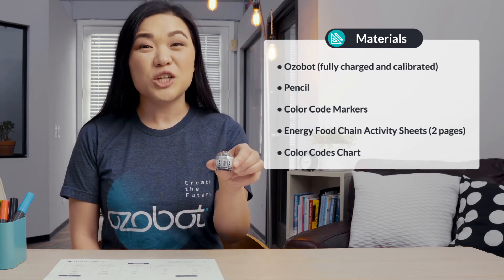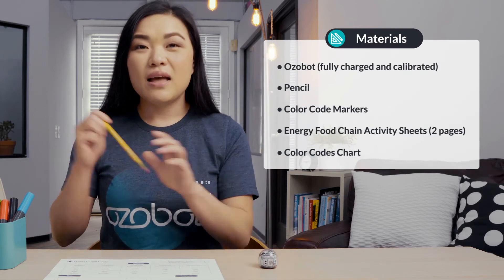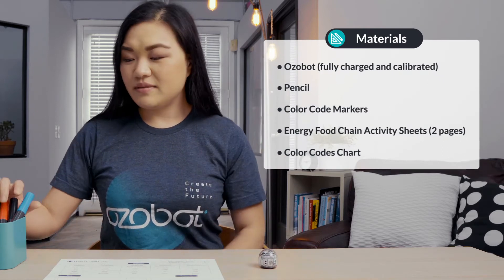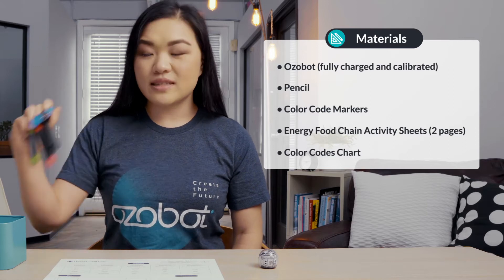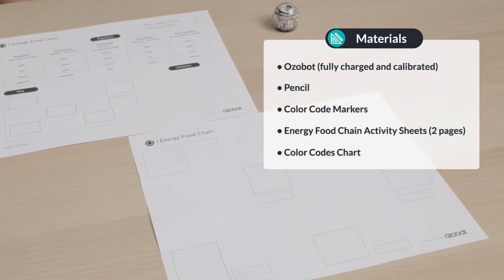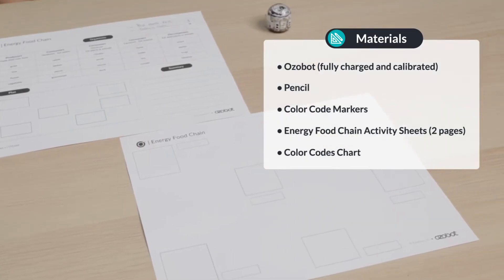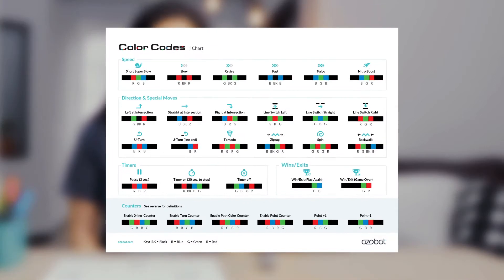For today's lesson, you will need an Ozobot fully charged and calibrated, a pencil, color code markers, both pages of your energy food chain activity sheets, and a color code chart.